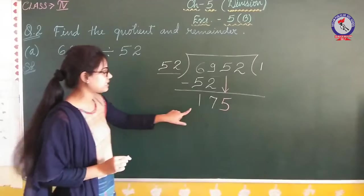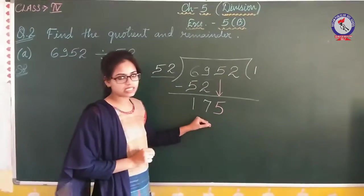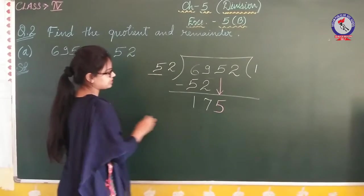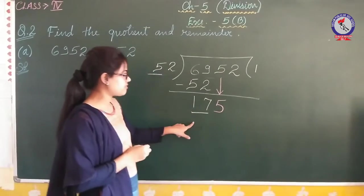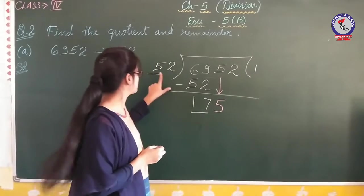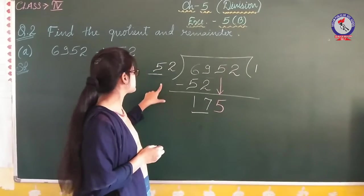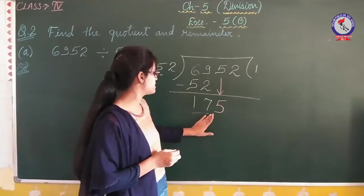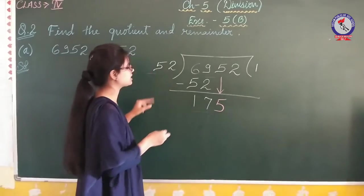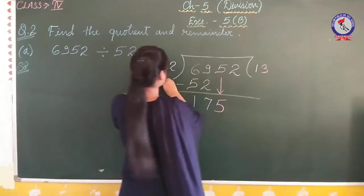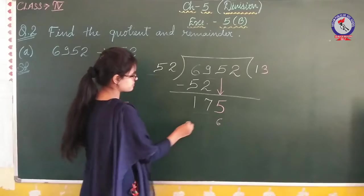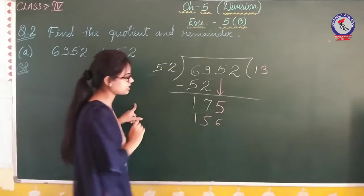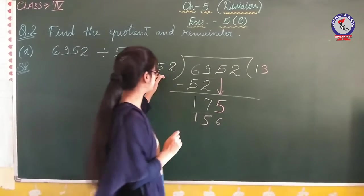Now we have 52 going into 175. We check how many times 52 fits: 52 times 3 is 156. So 52 goes into 175 three times. That gives us 3, and 52 times 3 is 156.